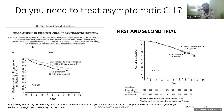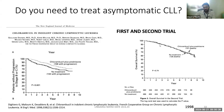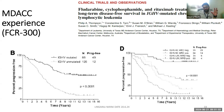A 1998 paper comparing chlorambucil-prednisolone versus no treatment in indolent, asymptomatic CLL showed no difference in overall survival, though there was an improvement in progression-free survival with treatment. This established that treating asymptomatic CLL provides no survival benefit — a finding that has held even in the era of novel therapies.